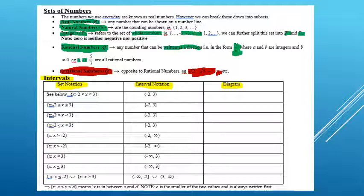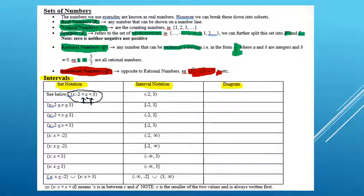Looking at this first set notation: it says the set of x such that negative 2 is less than x is less than 3. In set notation, when x sits between two numbers, we always use less than symbols. So this says the value of x is a number between negative 2 and positive 3. The equivalent interval notation is negative 2 comma 3 in round brackets. The round brackets indicate it's not equal to 3 and not equal to negative 2, as the inequalities show.